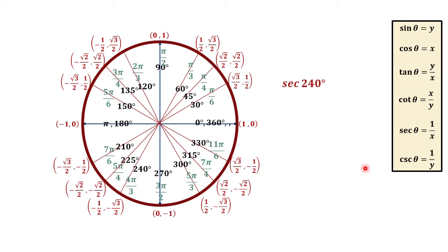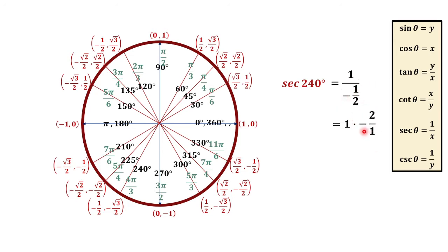For secant 240 degrees, secant theta is equal to 1 over x. For 240 degrees, the x-coordinate is negative one-half. So we have 1 over negative one-half. Copying the numerator and multiplying by the reciprocal of the denominator gives negative 2 over 1. Simplifying, secant 240 degrees is equal to negative 2.